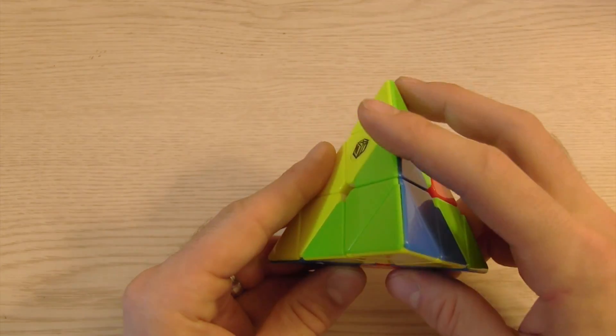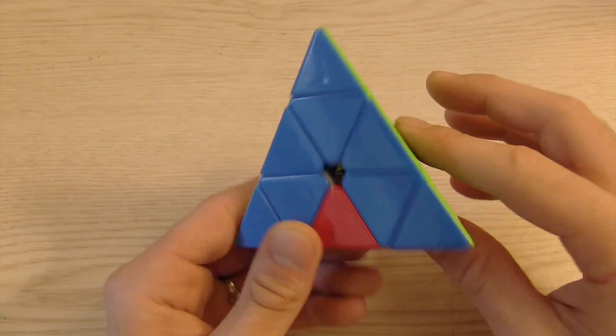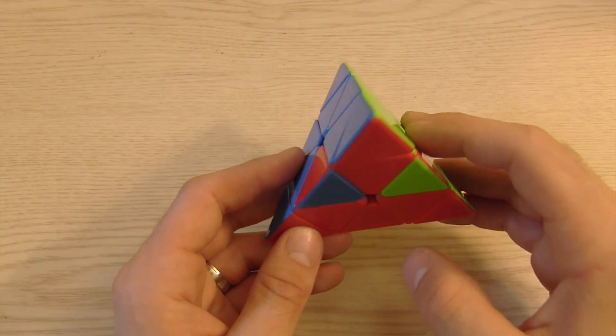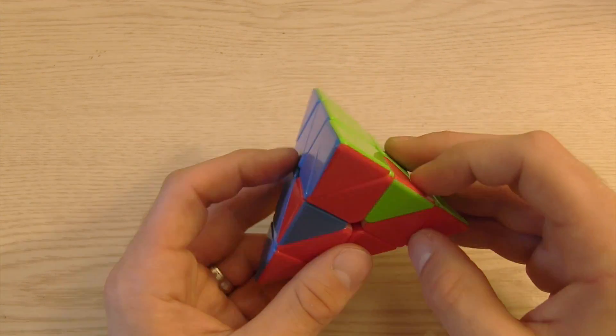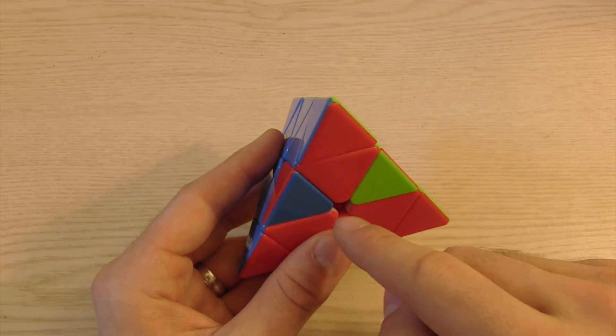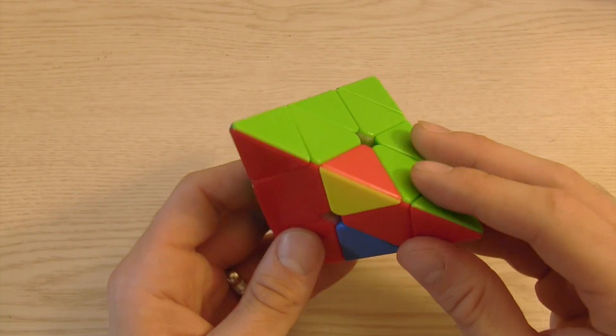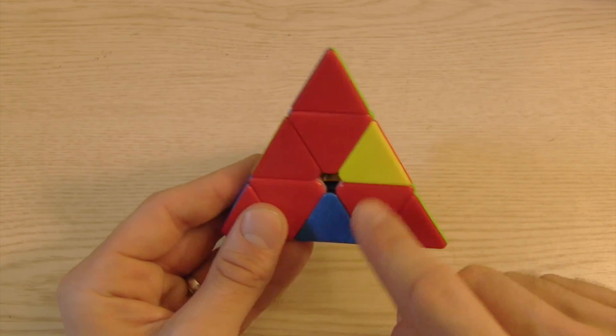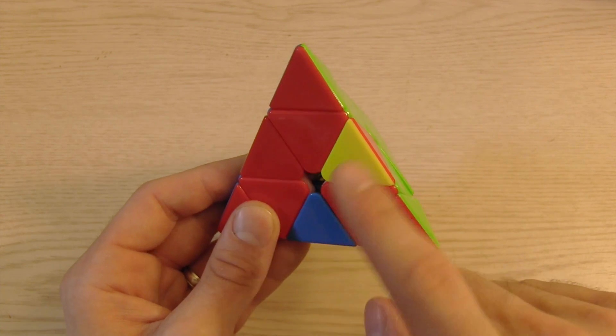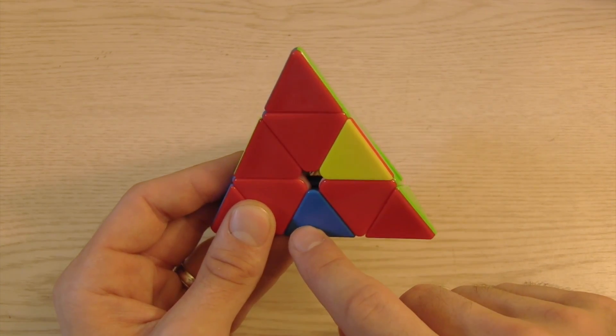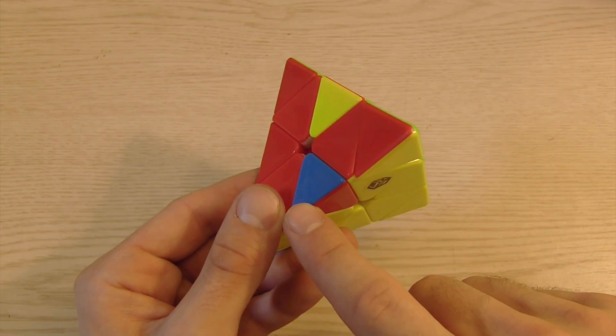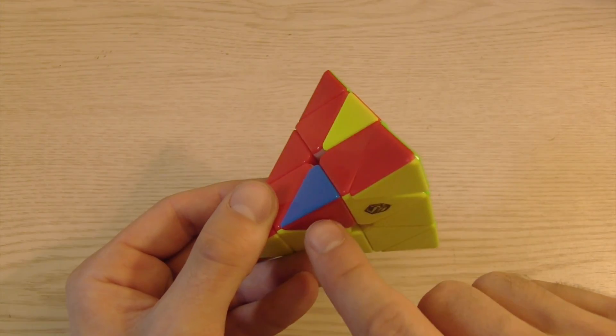Once you have this top layer solved you just orient it and now you have the bottom layer. And there's three cases you can have. So I'm going to come back to this one in just a second. So the first main case you can have is where you have these three out of place but two of them are flipped the wrong way. And what you'll notice is one of them can just move straight down. So here's a red and yellow it can move right down to here.